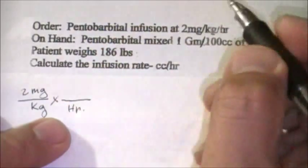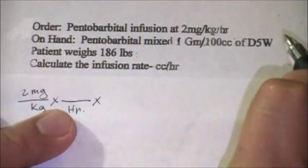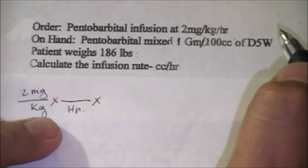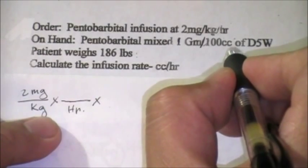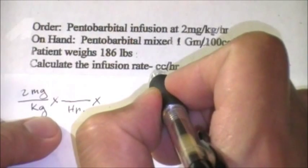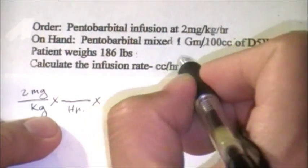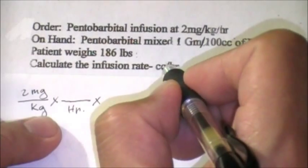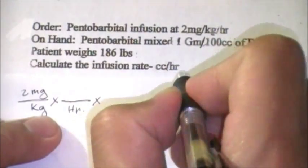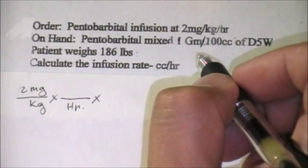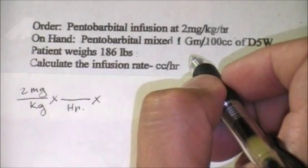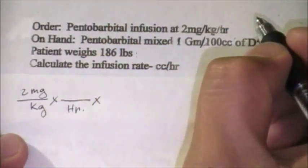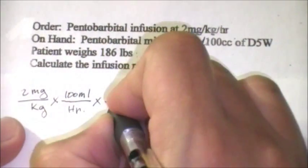We want to make another fraction using 100 ml as our numerator because our unknown, based on the question and what we're trying to find, is ml per hour. So we want to write ml as the numerator in our final answer.